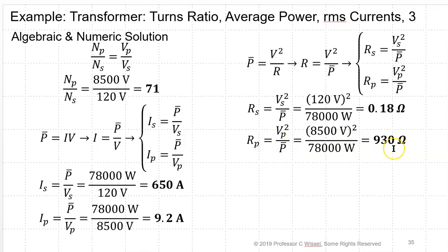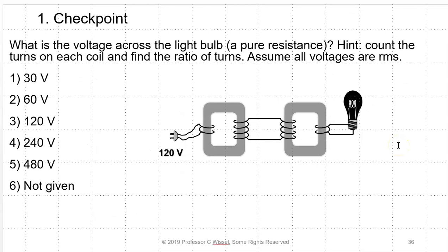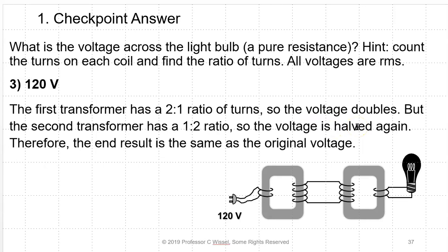Checkpoint: a light bulb connected to two transformers with 120 V input. The first transformer has 2 turns in and 4 turns out — a 2:1 step-up — giving 240 V. The second transformer has 4 turns in and 2 turns out — a 2:1 step-down — giving 120 V across the bulb. This mimics what the power company does: step voltage up for long-distance low-current transmission, then step it back down to safe levels.